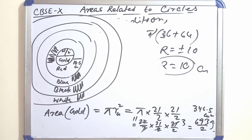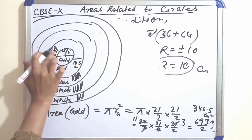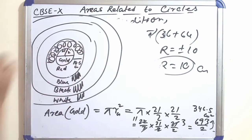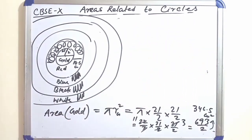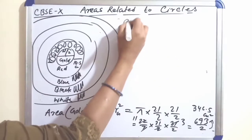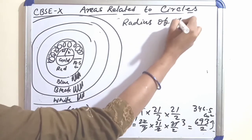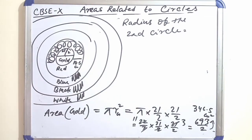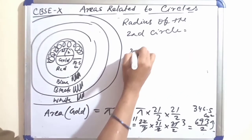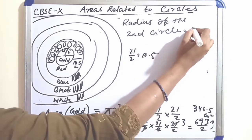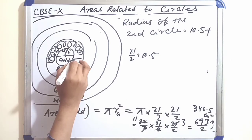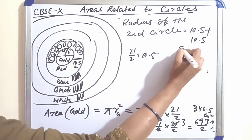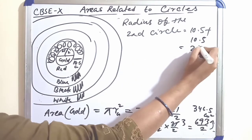Next, the red region. The radius of the second circle (up to red boundary) = 10.5 + 10.5 = 21 cm. The red region is a ring, so we need the area of the full circle up to red, minus the gold area.